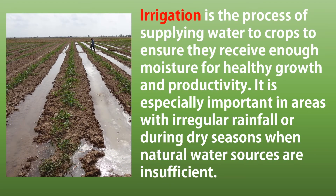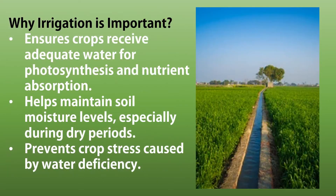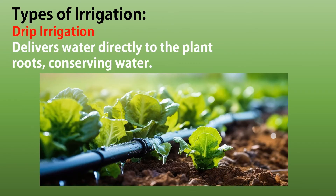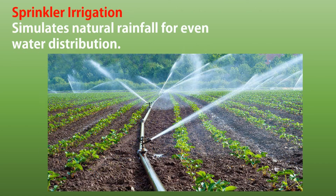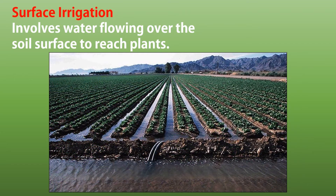Irrigation is the process of supplying water to crops to ensure they receive enough moisture for healthy growth and productivity. It is especially important in areas with irregular rainfall or during dry seasons. Various types of irrigation systems are used, including drip, sprinkler, and surface systems. Drip irrigation can save up to 70% more water compared to traditional methods while delivering nutrients directly to plant roots. Irrigation dates back over 6,000 years, with ancient civilizations like Mesopotamia using canals and dikes to water their crops.